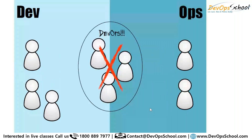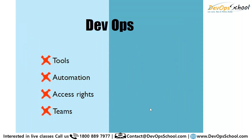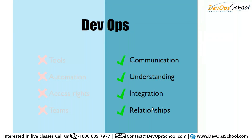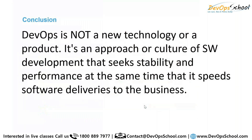DevOps is not a tool, not automation, not access rights, not only a team. DevOps is all about how effectively you communicate with each other — dev team, QA team, operations team. How well you communicate, how effectively you understand each other, how easily integration happens, the relationship between dev, QA, and operations working together toward that goal. Tools, automation, access rights, and teams come after. DevOps is an approach or culture for software development that seeks stability and performance while speeding software delivery to the business.